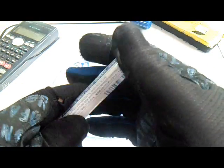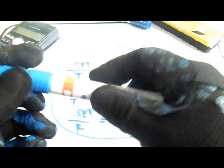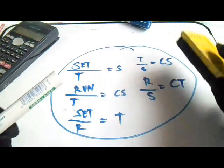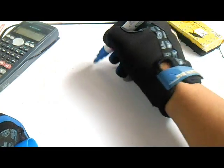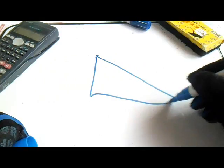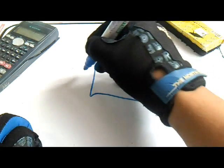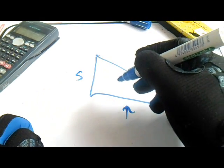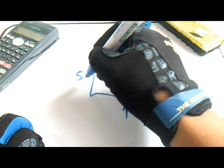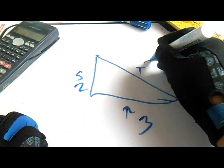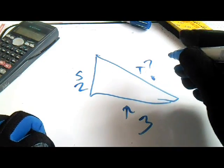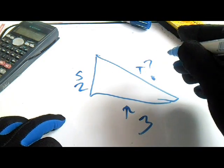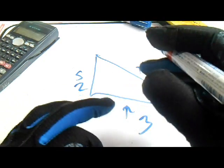How about finding the unknown side? We have a triangle with set, run, and travel. We have a given — two of the three sides — and we find the length of the remaining side. This is also a formula we can use.